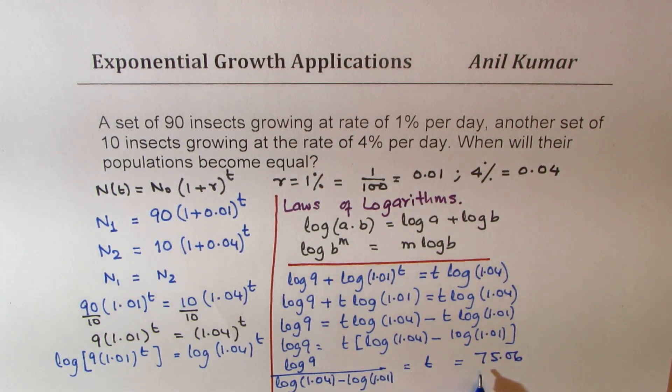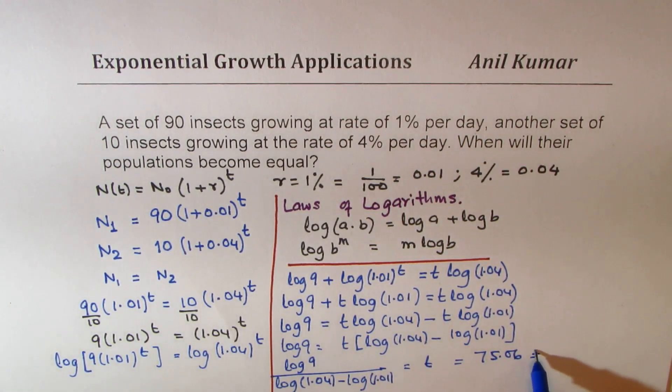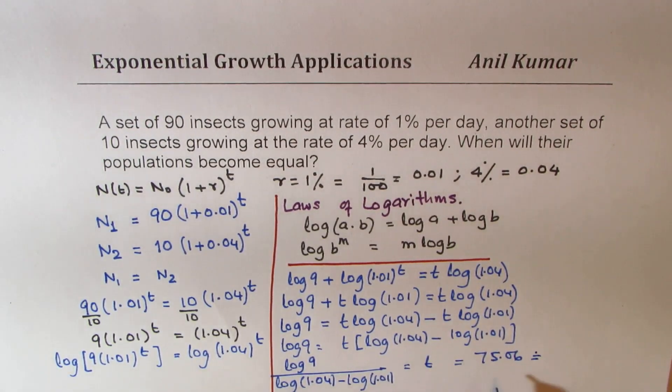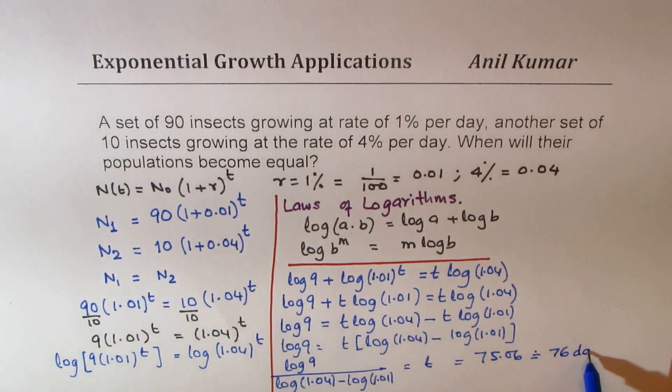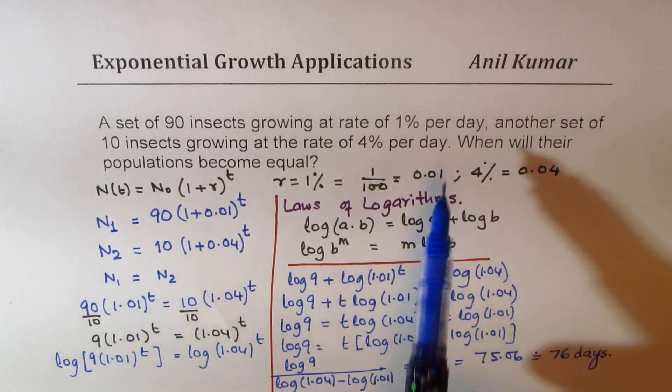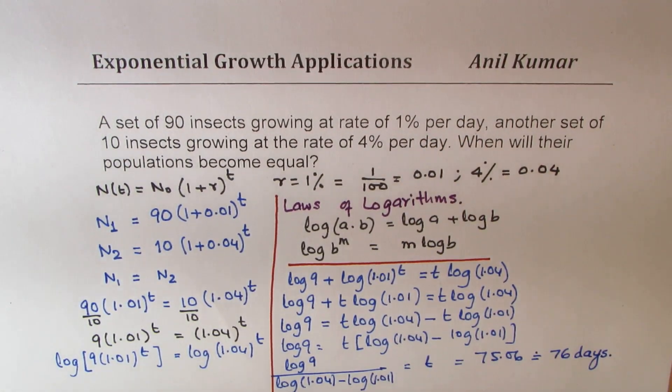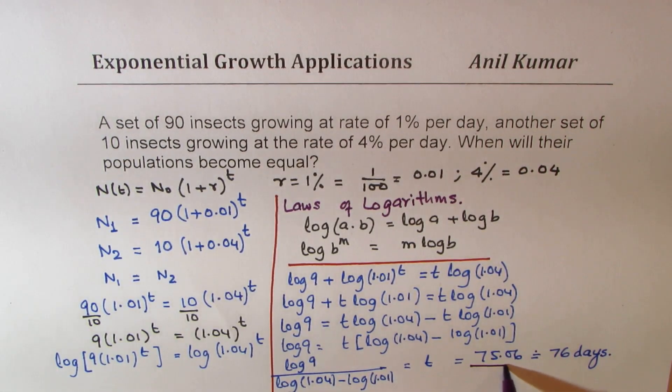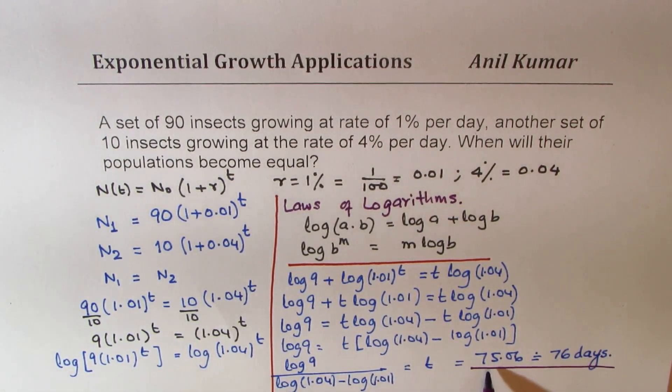So that is the answer. So it takes slightly more than 75, now this rate is per day, so slightly more than 75 days. So we'll round it higher, let's say 76 days. This is growth rate per day, so that gives you the solution. It's actually almost 75 days, so you would write 75 also, but 76 is better.